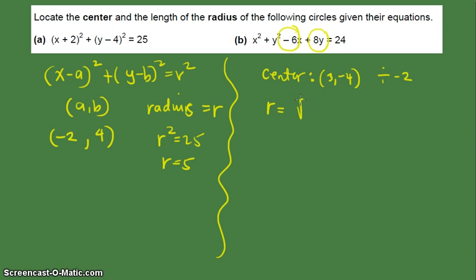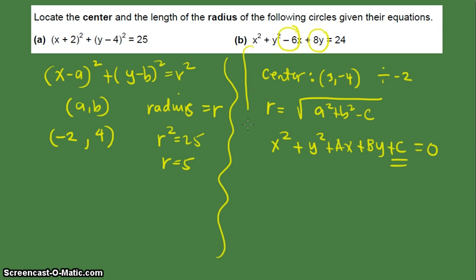For the radius, we will be using the formula a squared plus b squared minus c where c is the constant in the general form. So if you remember, we can have the x squared plus y squared plus ax plus by plus c. If this is the general form, then this is the value of c in the formula for the radius. But as you can see, this is equal to 24 and not equal to 0. So you have to rewrite this equation into x squared plus y squared minus 6x plus 8y minus 24 is equal to 0. So that makes the value of c equal to negative 24.